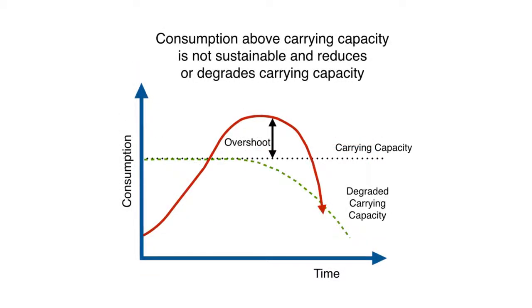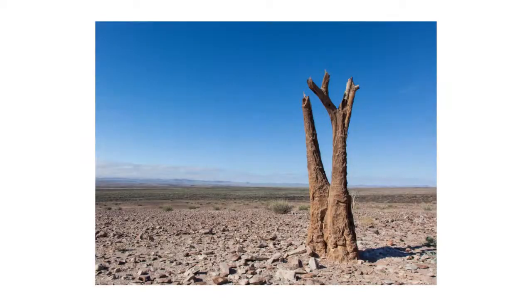But if we overshoot — which means exceeding that carrying capacity — we degrade the ecosystem so it can only support a much smaller level of activity in the future. Imagine overgrazing rangeland until all the grass is gone and it becomes a desert. That would be the result of overshooting. An area that once supported hundreds or thousands of grazing animals now supports none.